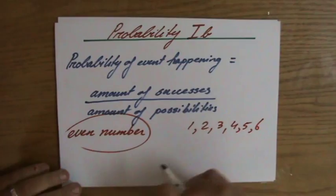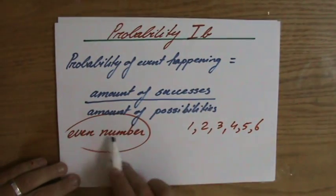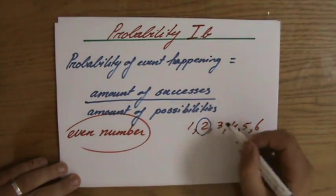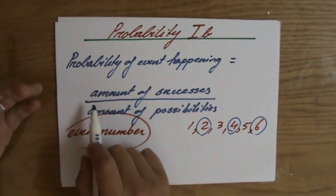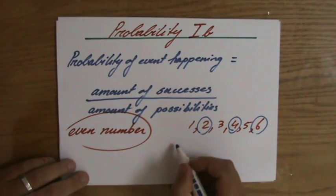Now, which ones are even? So what are my successes? Which ones are even? Well, two, four, and six. So how many successes do I have? What is the amount of successes? Well, I have three.